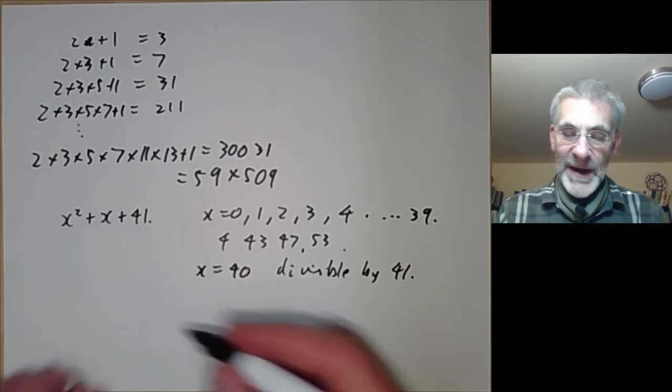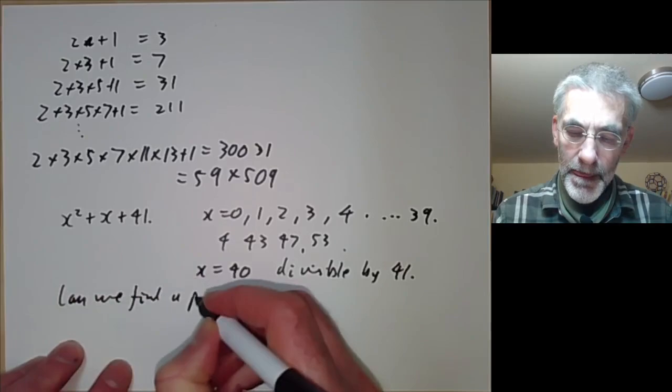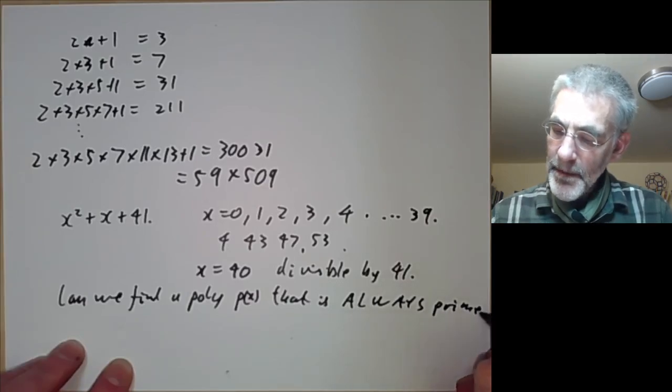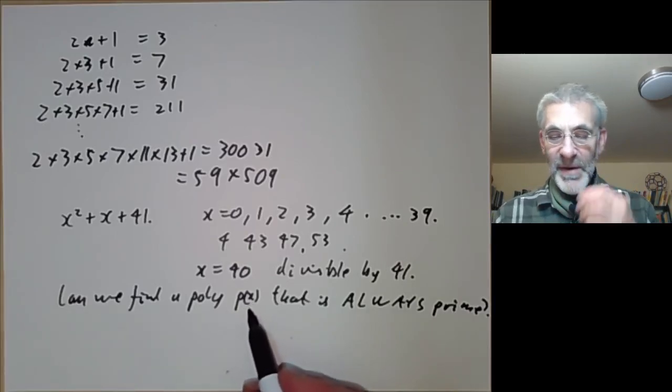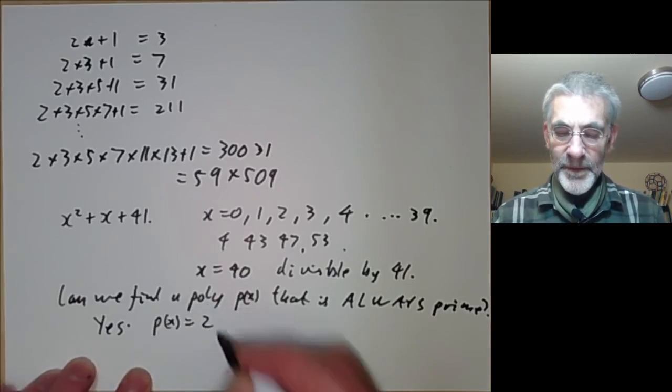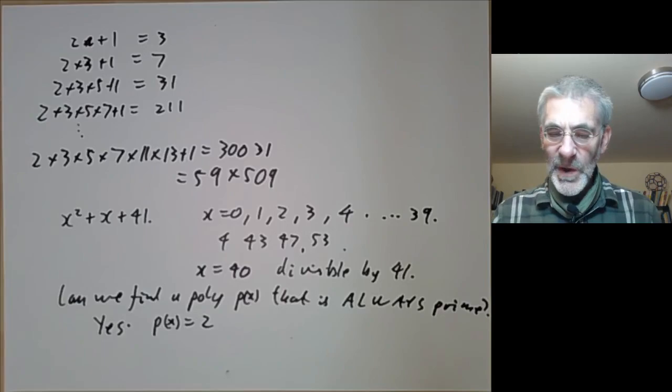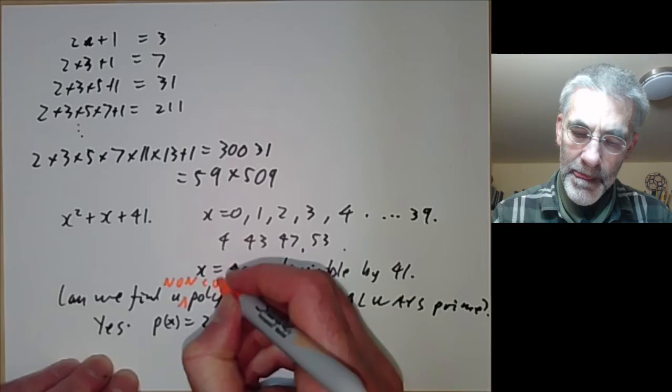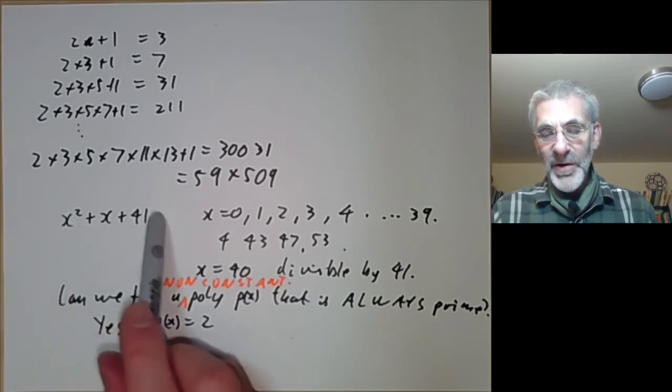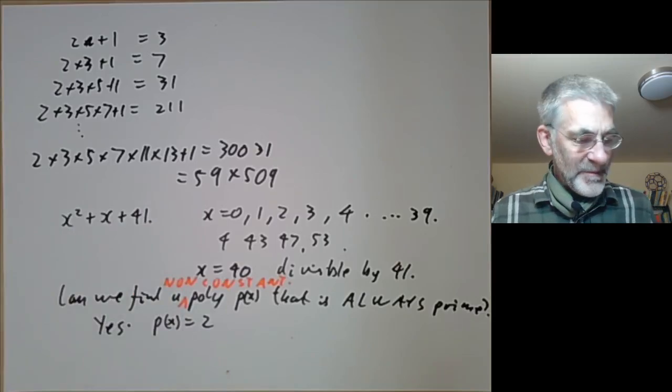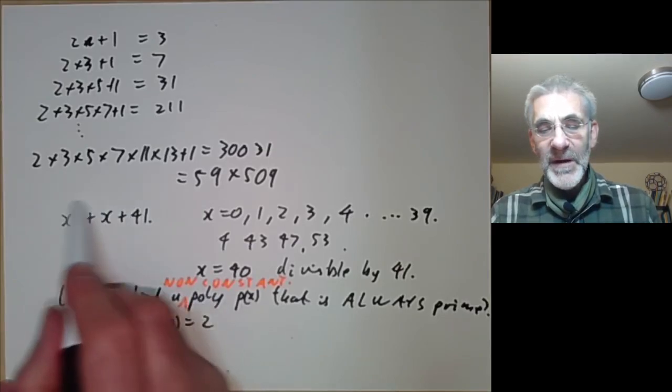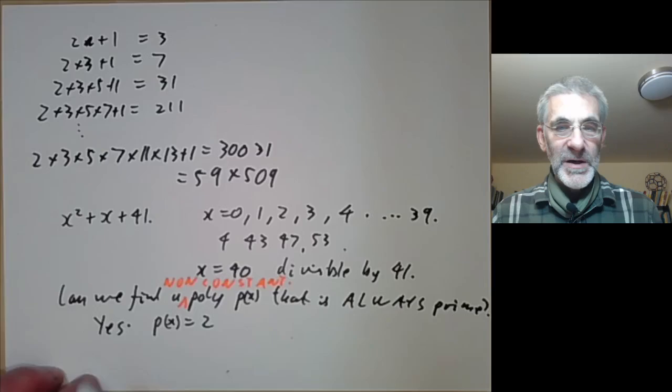So this suggests the following problem. Can we find a polynomial p of x that is always prime? I mean always prime for x an integer or maybe a positive integer. Well the answer is actually yes, we can just put p of x equals 2. Kind of a stupid answer. So that obviously wasn't what the question meant. What we should have said was non-constant. So is there a non-constant polynomial that's always prime? So you can find polynomials that are prime for quite a lot of the time. But you see it's actually obvious that this one isn't prime for all x because we can just put x equals 41 equal to the constant term and then everything will be divisible by 41. So unless the polynomial is constant it can't always be prime.